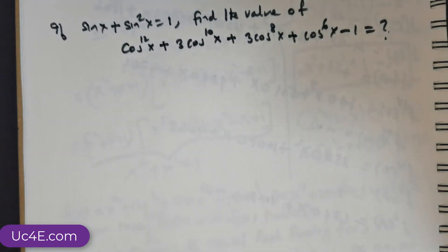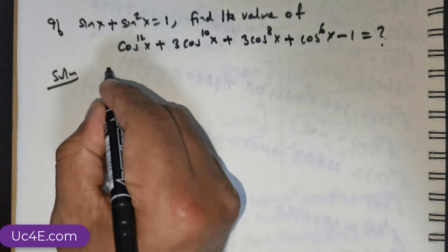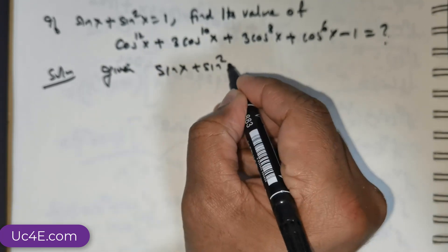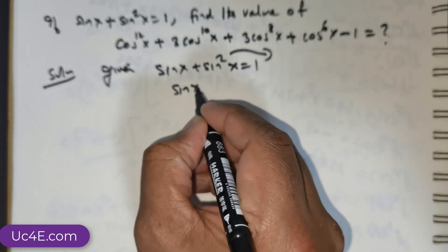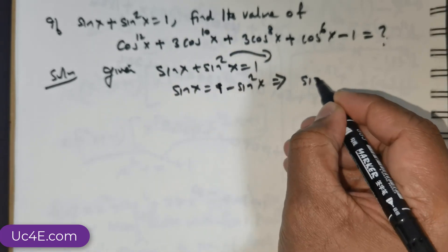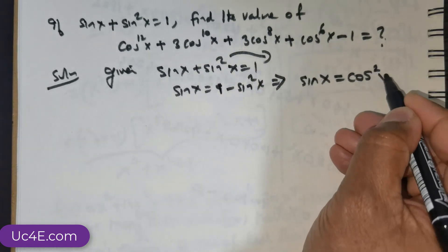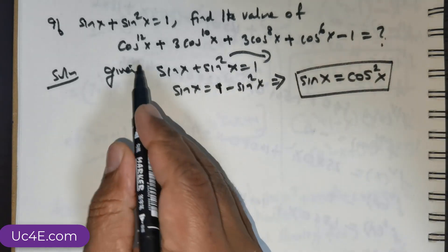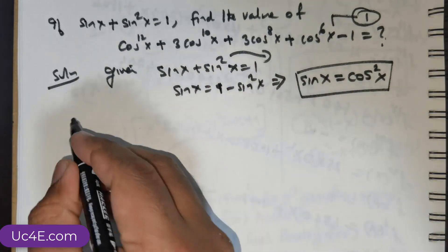So this is what is required. Now let me start the solution. We have been given that sin x + sin²x = 1. Pushing sin²x to the other side, sin x = 1 − sin²x, which means sin x = cos²x. So I would take this as identity 1, and rewrite everything in terms of sin x.